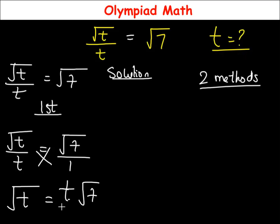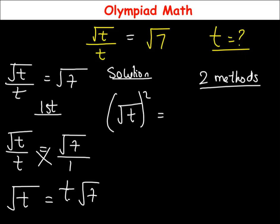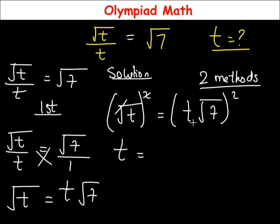Now with this, the next thing is to remove the square root. To remove the square root, we are going to square both sides of the equation. So (√t)² is equal to (t√7)². The square cancels the square root, so t stands alone on the left side.